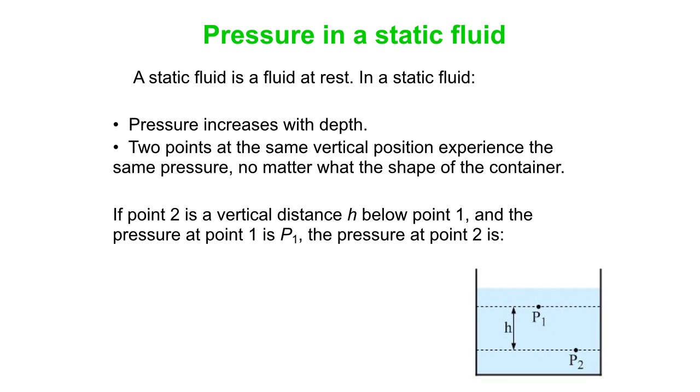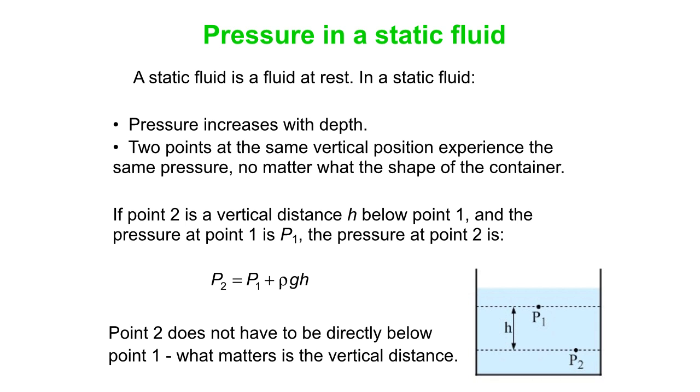So point 2 here is a vertical distance h below point 1. It doesn't matter that it's been horizontally displaced. That makes no difference. The pressure at point 1 is what we call P1. Pressure at point 2 is P2, and P2 is P1 plus rho gh. And again, point 2 does not have to be directly under point 1, just the vertical distance matters.